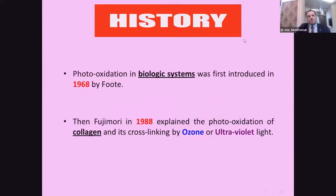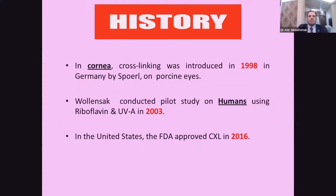Cross-linking is not a recent issue. It was first mentioned by Dr. Foote in 1968, who was the first to discuss biological oxidation in biological systems. In 1988, Dr. Fujimoto was the first to discuss oxidation of collagen and its cross-linking by ozone or ultraviolet. In cornea, Dr. Spoerl was first to discuss corneal cross-linking in porcine eyes in 1998, and Dr. Wollensak conducted the pilot study in humans using riboflavin and ultraviolet-A in 2003. Cross-linking was approved by the FDA four years ago.